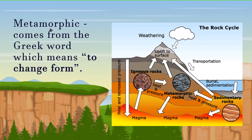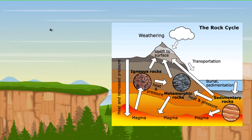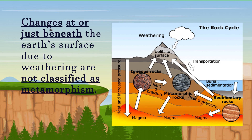The word metamorphic comes from the Greek word which means to change form. The chemical components and crystal structures of the minerals making up the rock may change even though the rock remains a solid. Changes at or just beneath the earth's surface due to weathering are not classified as metamorphism.